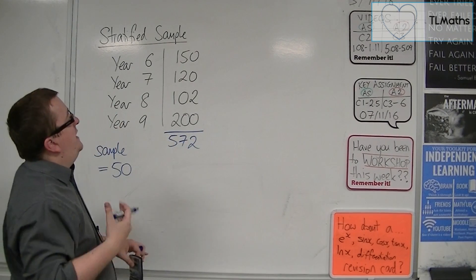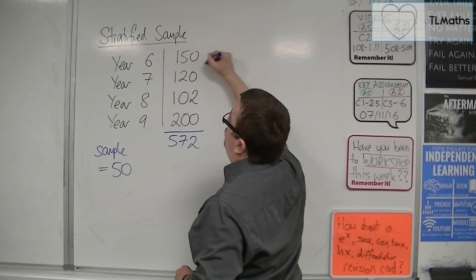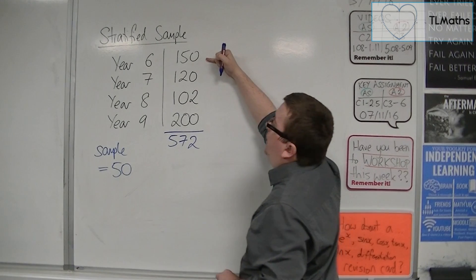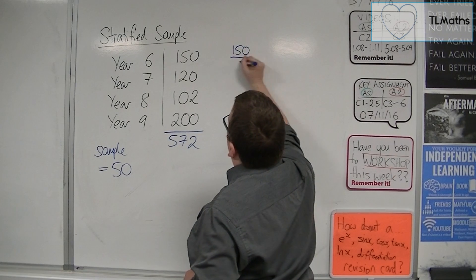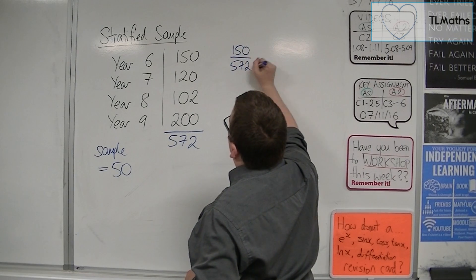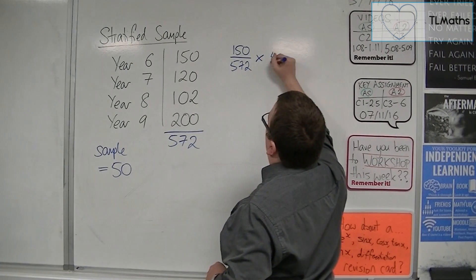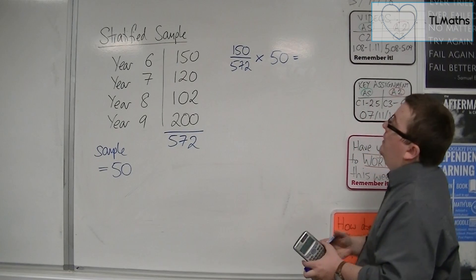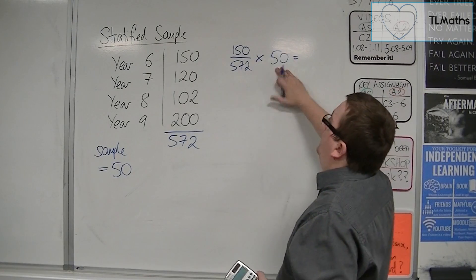So what I need is, I need to find a fraction for each of these. 150 students in year 6. So I want 150 of 572. And I want that fraction of the sample size. So that's going to give me the same proportion as there are in the school in the sample size.